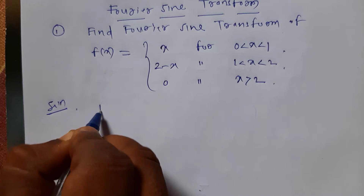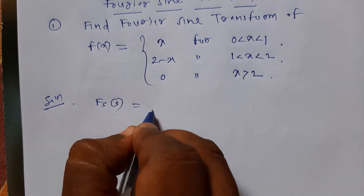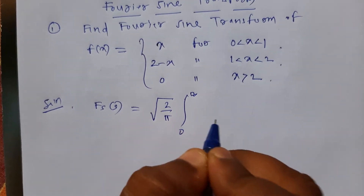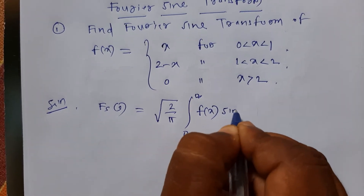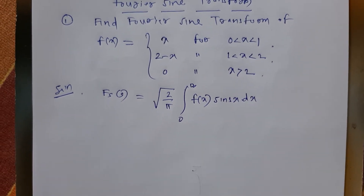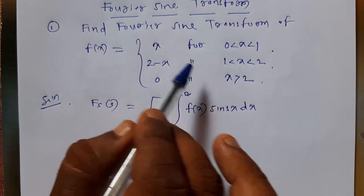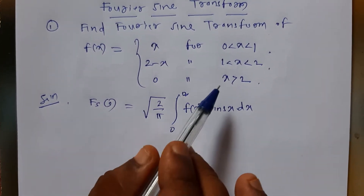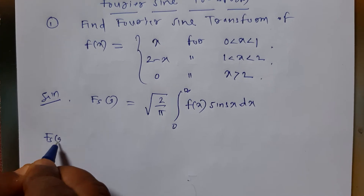Solution. First I will write the formula for Fourier Sine Transform, which is given by square root of 2 upon pi, integration 0 to infinity. As per the given problem, as it is divided into three different ranges, I will split this integral from 0 to infinity into three different ranges by using the properties of definite integral.